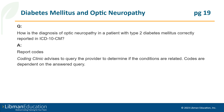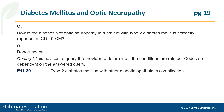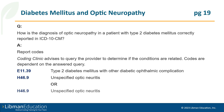Codes would be dependent on the answered query. If the provider confirms that the conditions are related, report codes E11.39, type 2 diabetes mellitus with other diabetic ophthalmic complication, and H46.9, unspecified optic neuropathy. Or if the provider documents that the conditions are not related, the codes would be H46.9, unspecified optic neuritis, and E11.9, type 2 diabetes mellitus without complications.